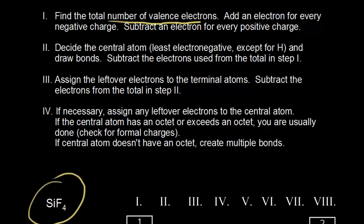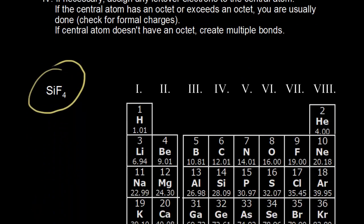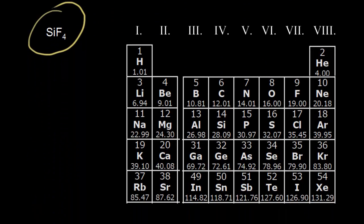To find the valence electrons, we need to look at a periodic table. Here I have a modified version of the periodic table where I've cut out the D block so we can focus on the elements we'll be drawing in our dot structures. This also makes it easier to see how the group numbers correspond to the number of valence electrons. For example, elements in the first group — like hydrogen, lithium, or sodium — all have one valence electron. So the group number corresponds to how many valence electrons an element has.